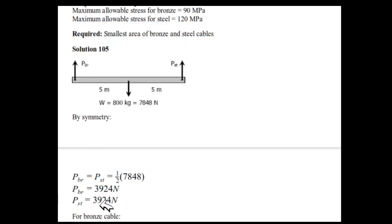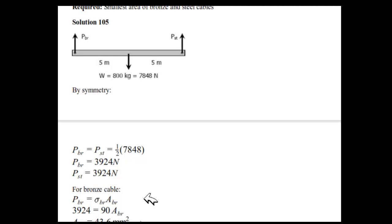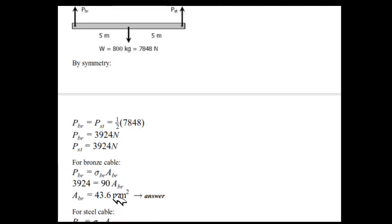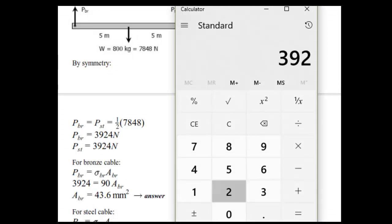Now for bronze cable, we know that P bar equals stress into area, or stress equals load by area, so load equals stress into area. We have load P bar which is 3924, and we have stress that is 90 megapascals for bronze, so we will be able to find area. Just divide 3924 by 90. Let me do it for you: 3924 divided by 90, so 43.6 mm squared is your area required for bronze.